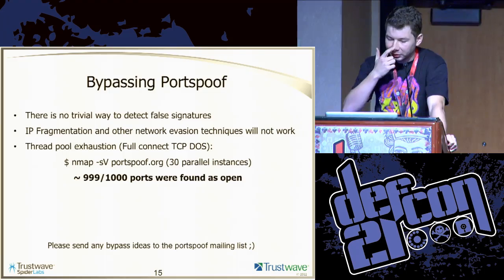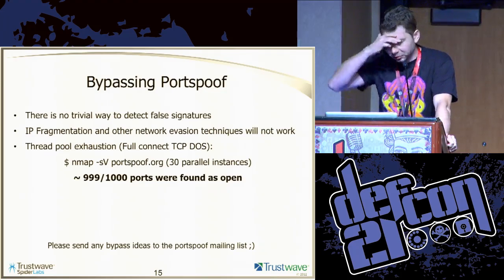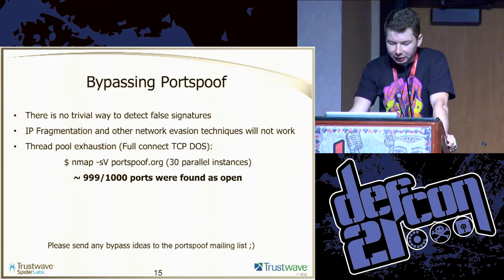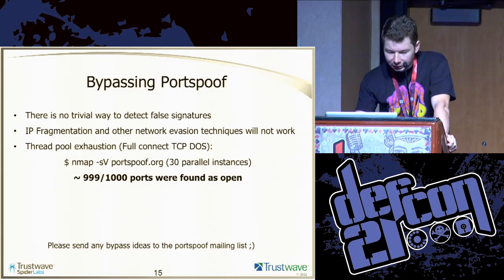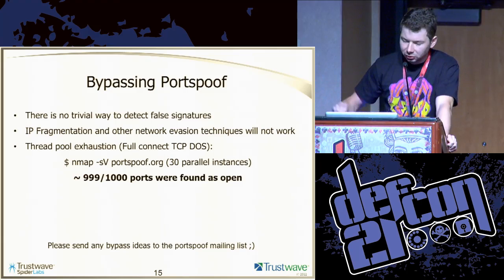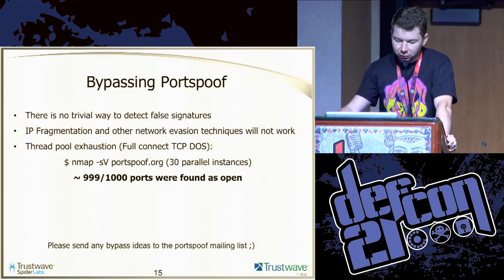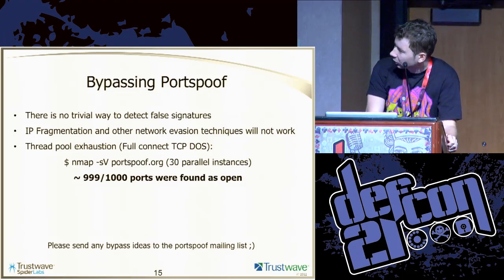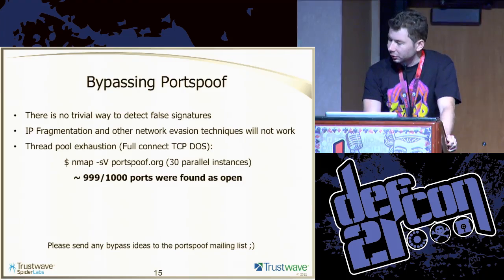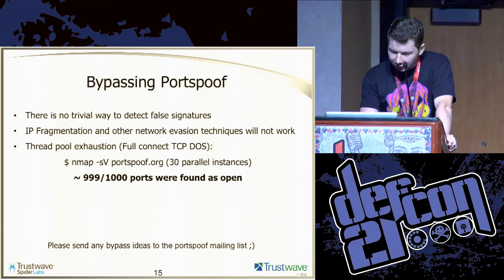I'm sure you're thinking there must be some kind of bypass. There is no trivial way to detect false signatures apart from using some kind of protocol probes. IP fragmentation and other network evasion techniques will not work because it goes through the kernel to the user-space program I've written — you can use fragmentation at any layer you want, it will be reassembled at the end. The only thing that will work is a full connected TCP DoS, but that's not a flaw in the idea; every software is actually vulnerable to that.